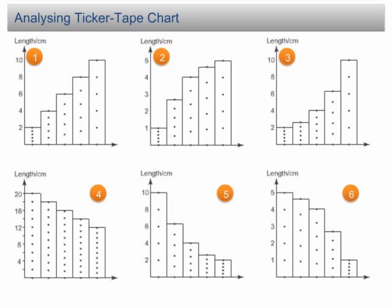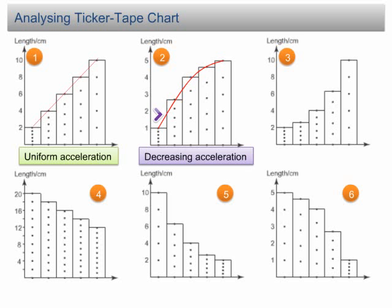Analyzing ticker tape charts. In chart 1, the length of the tape increases uniformly, denoting that the velocity increases at a uniform rate — the object moves at uniform acceleration. Always keep in mind that the length of the strip represents the speed of the object pulling the ticker tape. In chart 2, the length of the tape does not increase uniformly. At the beginning, the length increases abruptly; however, the increments become less and less afterward. Hence, the speed keeps increasing but the rate of increment decreases over time. This is an example of increasing speed but decreasing acceleration.